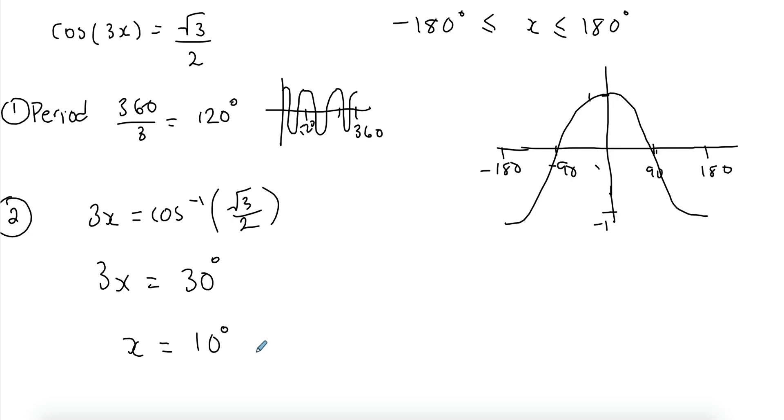Now 10 is just your first solution. Keep in mind when you're solving, you're solving for cosine is positive here. So if it's positive, we're looking at the first quadrant, and we're looking at the fourth quadrant. So this is my first quadrant solution.